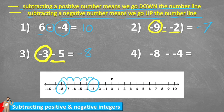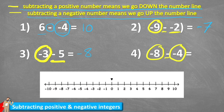So negative three minus five is negative eight. Last one: negative eight subtract negative four. Find negative eight on the number line — there it is. And if I subtract a negative, I actually come up the number line: one, two, three, four — and I land on negative four. So negative eight subtract a negative four is negative four.